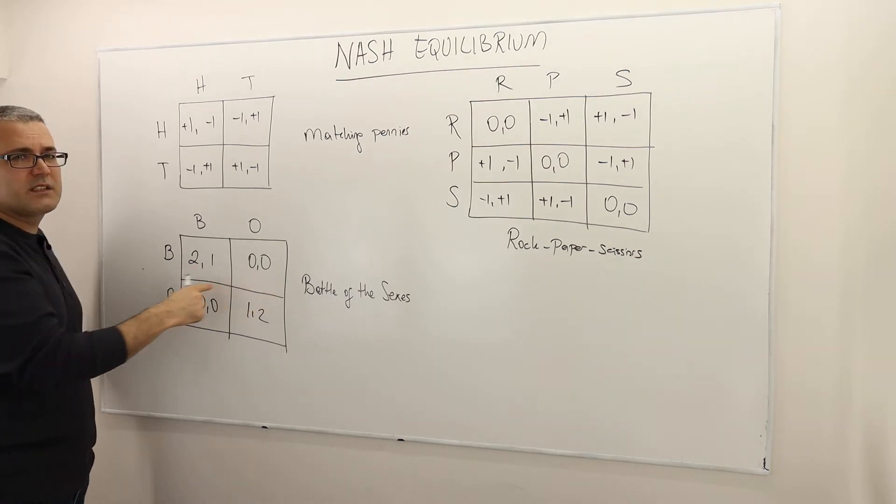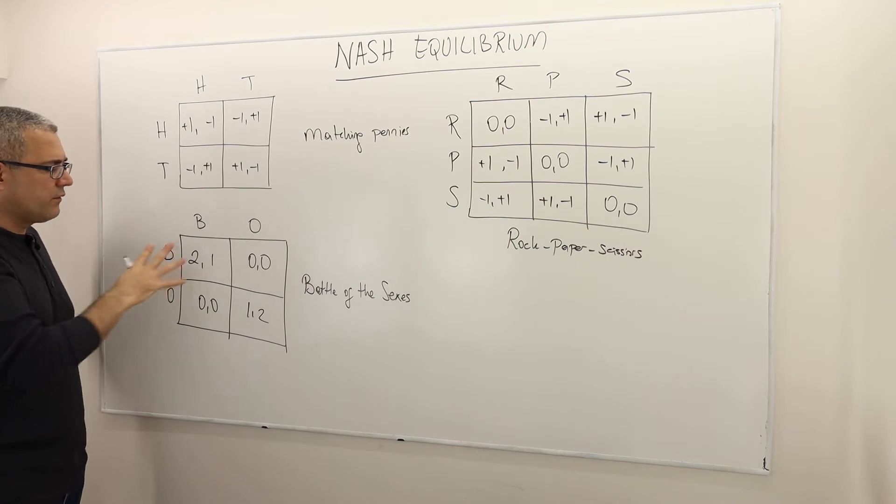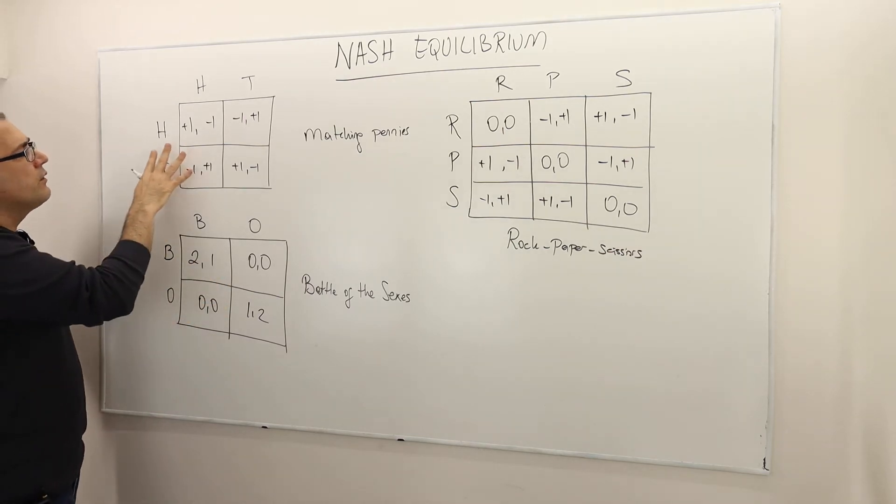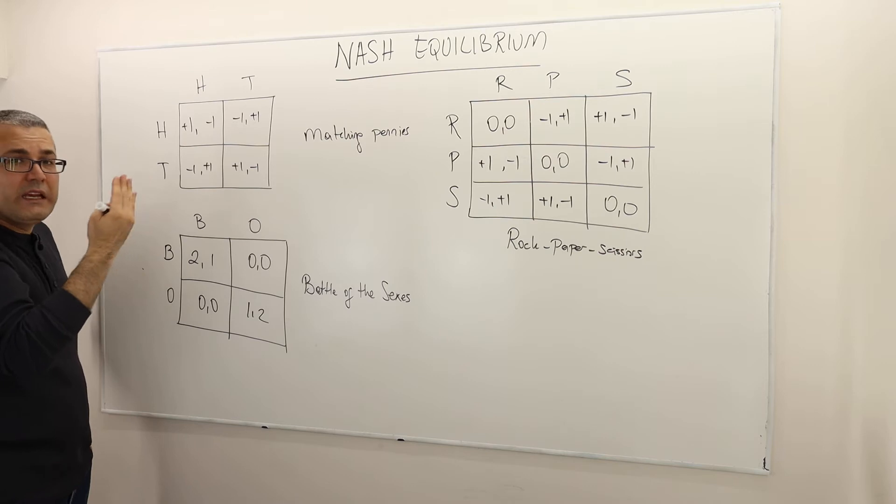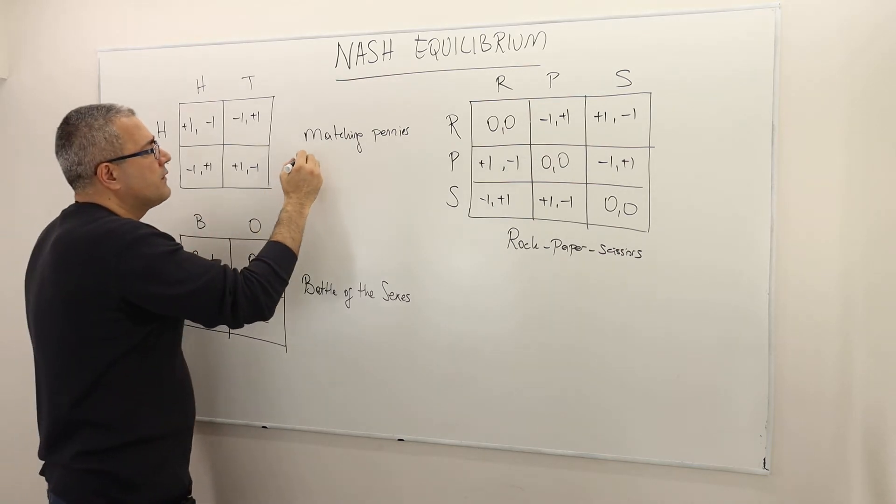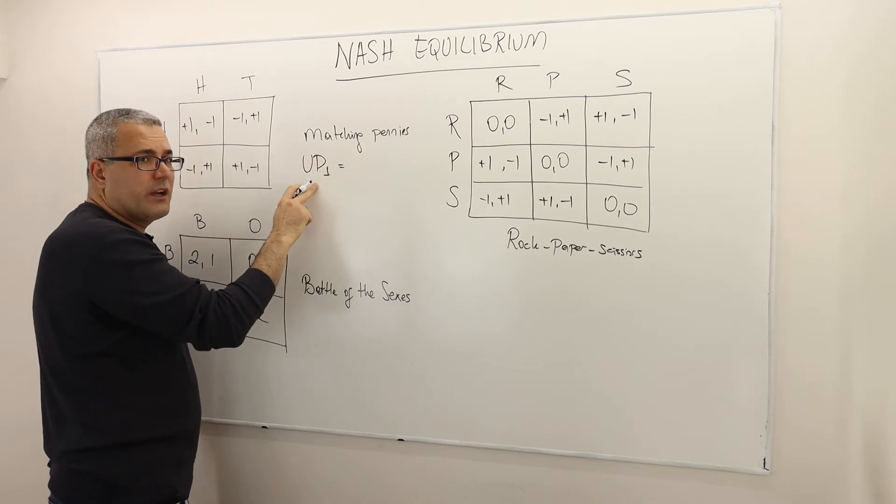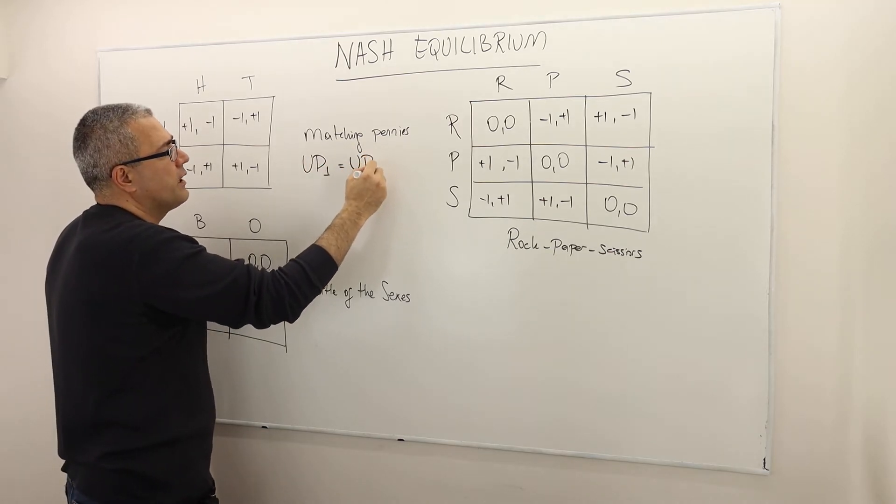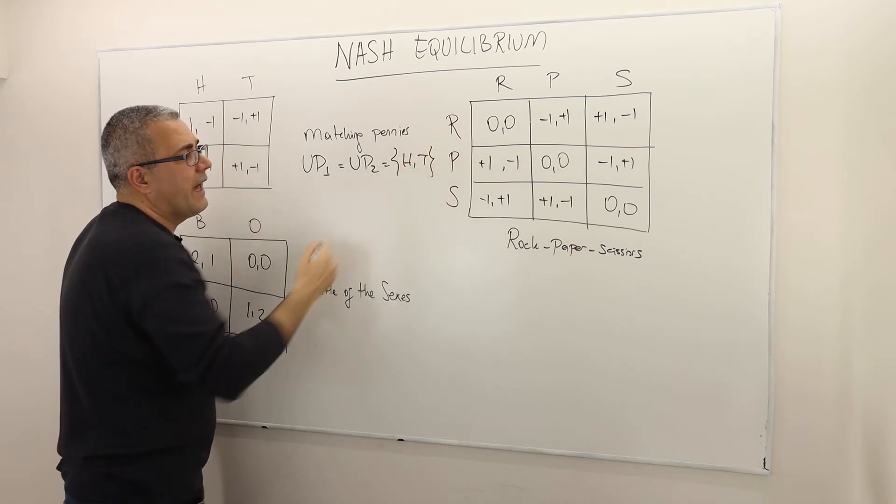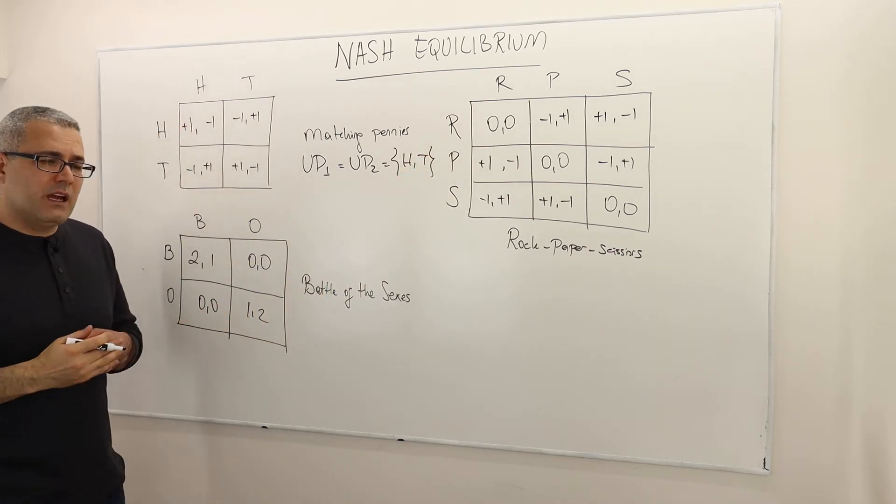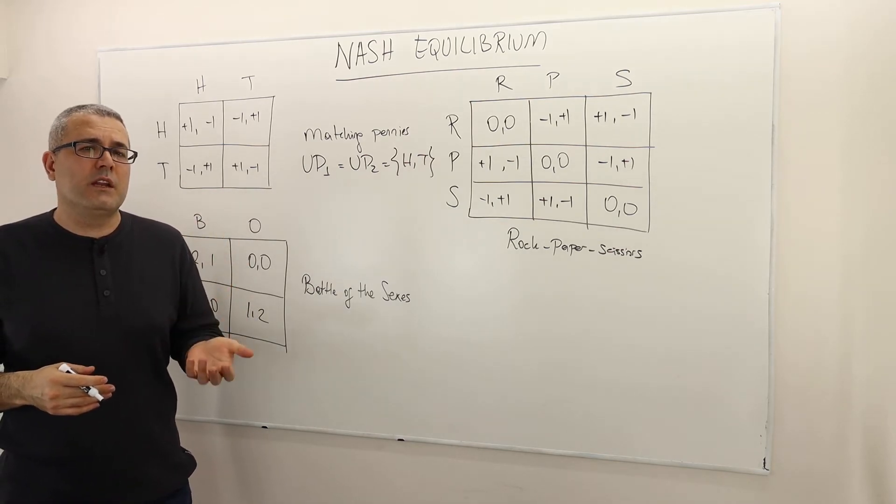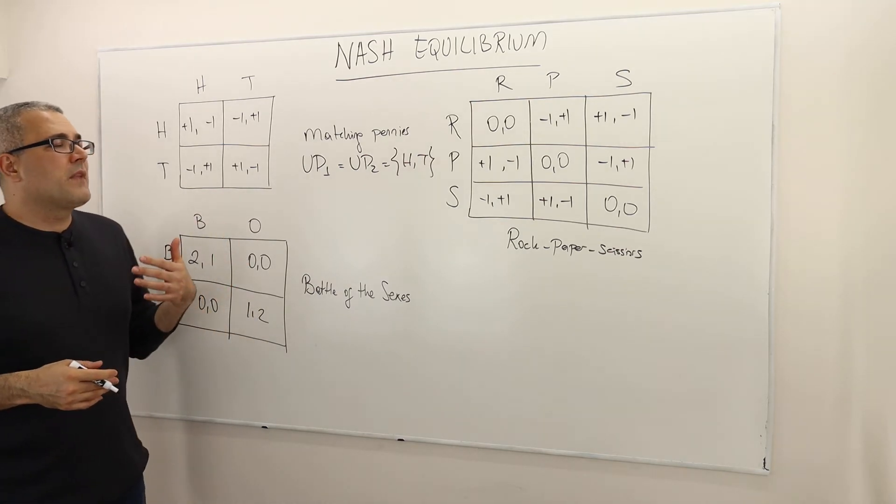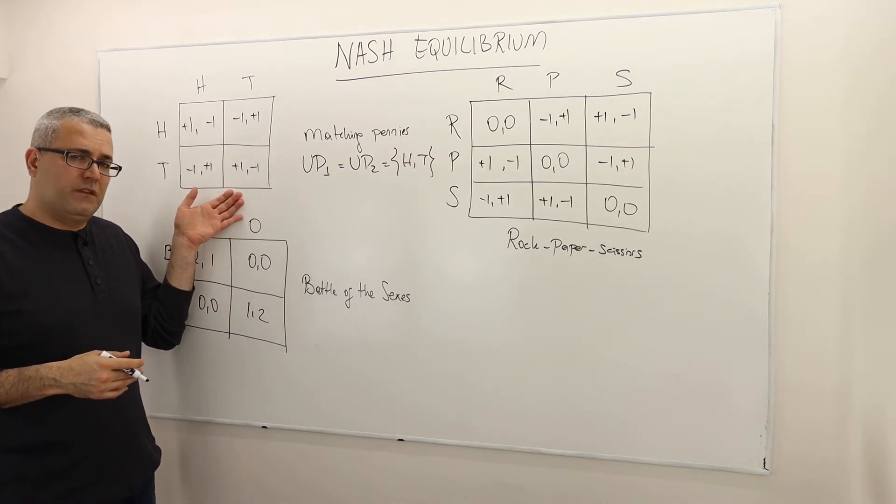This is not a zero sum game because, you know, here the sum is equal to three, but here the sum is equal to zero. So therefore, this is not a zero sum game. Anyway, so if you look at this game, you'll realize that no strategy is dominated strictly or weakly dominated by any player. So that means the undominated strategy for player one, the set of undominated strategies for player one and two are equal to, you know, the head and tail.